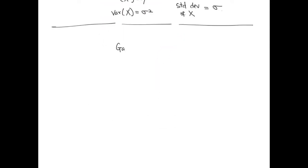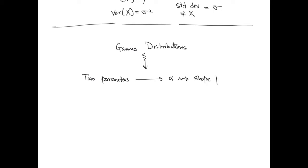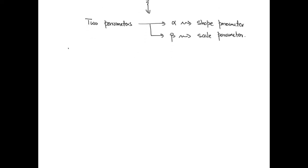We will next talk about the gamma distribution. The gamma distribution is given in terms of two parameters: the alpha parameter, which is called the shape parameter, and the beta parameter, which is called the scale parameter. The PDF for the gamma distribution is defined in terms of the gamma function and has the following formula.